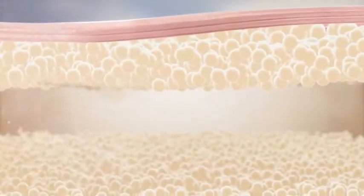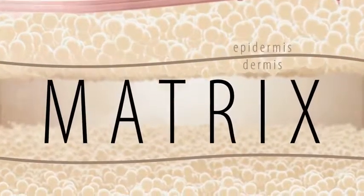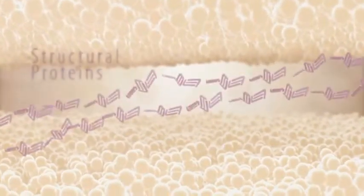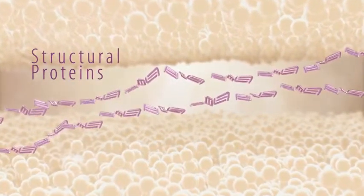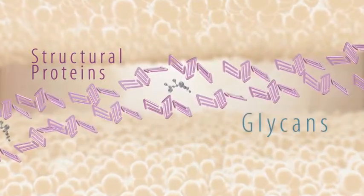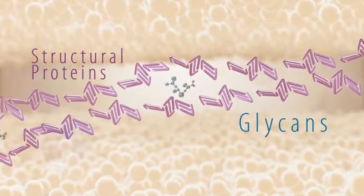Underneath the top layer of our skin is a firm, cushiony material called the matrix. The matrix contains structural proteins that form a mesh-like webbing which holds a unique composition of moisture-trapping glycans.